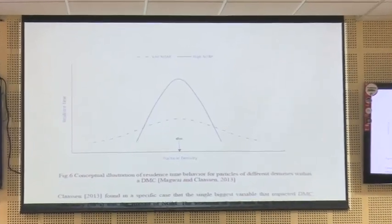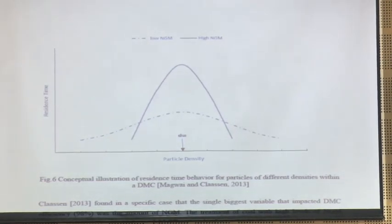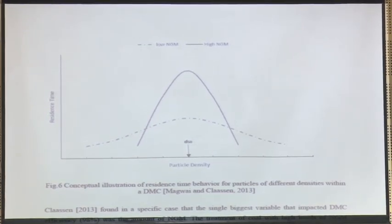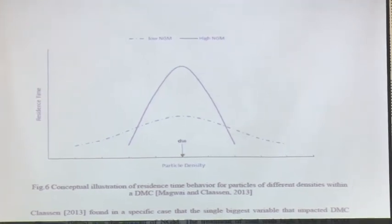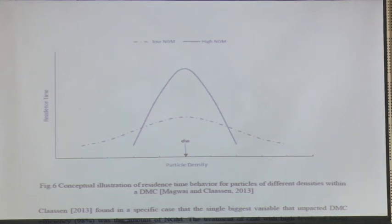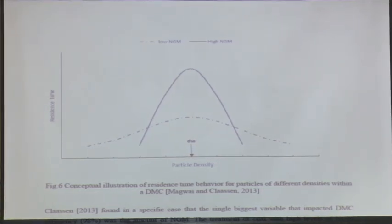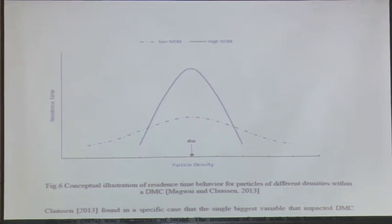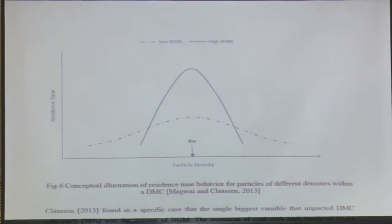This figure shows the thought process of research groups who think NGM plays a significant role. Reproduced from Maghwaiya and Klassen, the figure originally is from Tim Napiermann's work directed in JK Mercy. He conceptualized this whole idea. What he says is that a major reason for misplacement is not exactly NGM, but how long those NGM particles remain without reporting to any specific product within the system.